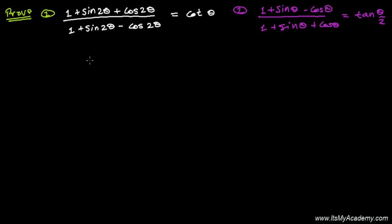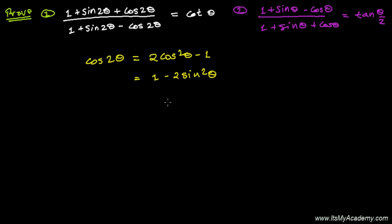Let's write the cosine of 2 theta formula. We have: 2 cos²θ − 1, and another one: 1 − 2 sin²θ. We have a tan format also but we don't need it now. Similarly for the sine formula, we have sin 2θ = 2 sinθ cosθ. I'm not going to the tangent format for now.